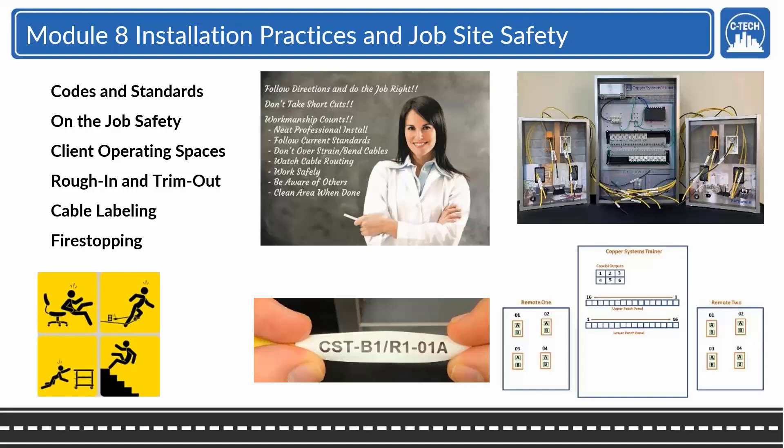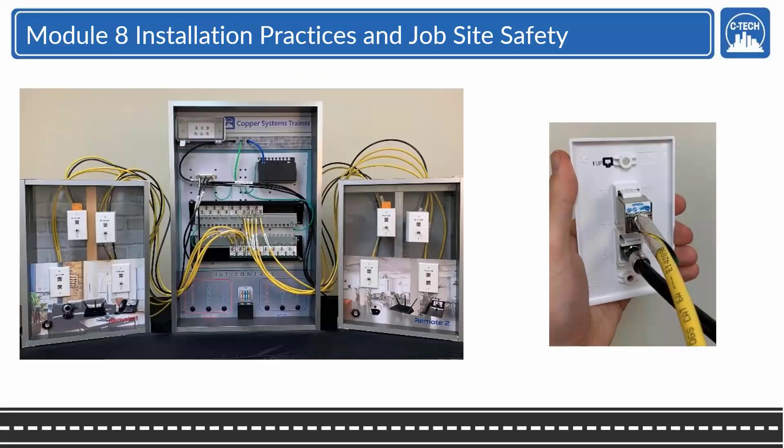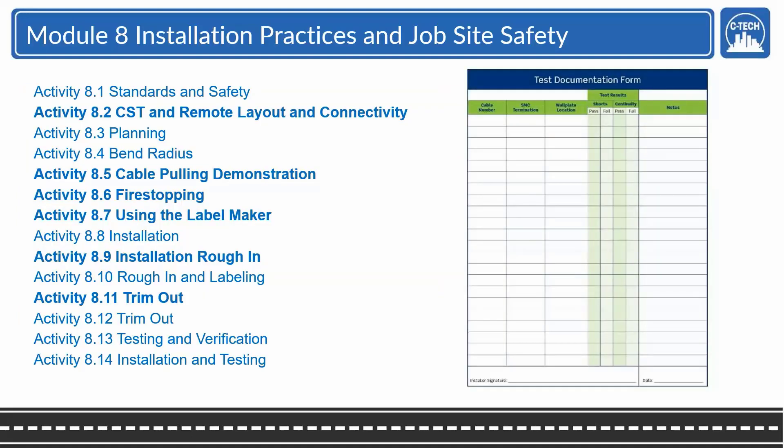And of course fire stopping. Some of the things done in trim out would be to put the face plate on, snap the jacks into the face plate, screw it all down, punch down the cables, and of course label them. And at the end we want to be able to test everything. Here are some of the activities.